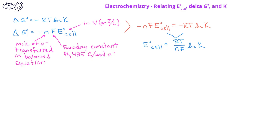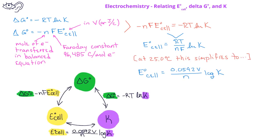While we could use this general relationship between the standard cell potential and the equilibrium constant, as long as we're working at 25 degrees Celsius, we can simplify this equation to: the standard cell potential equals 0.0592 volts divided by n, multiplied by the log of the equilibrium constant K. It's important to note that in the first equation we're using the natural log of K, whereas in the simplified equation we're using the log of K.